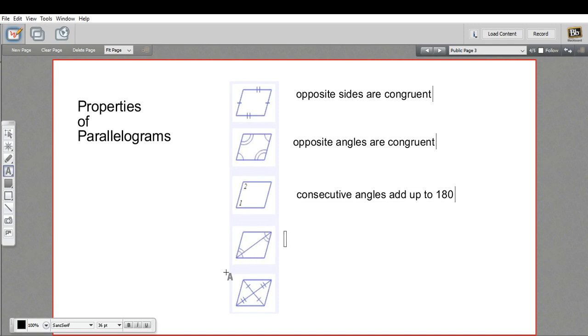When you have a diagonal that cuts across a parallelogram, the alternate interior angles that are created by that are also congruent. So alternate interior angles formed by a diagonal are congruent.